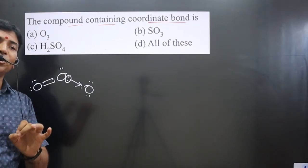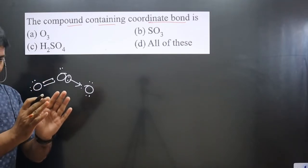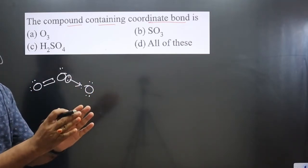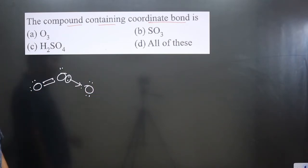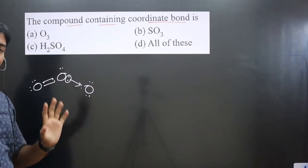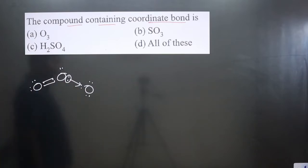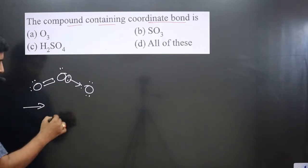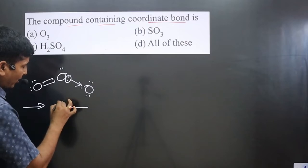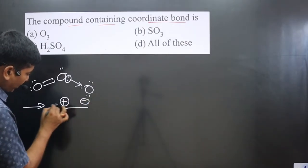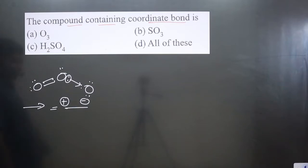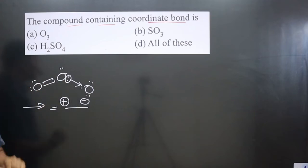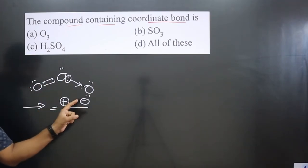A coordinate bond is a special type of covalent bond in which an electron pair is shared from one atom to another atom — mutual sharing is not there. Now its octet is also complete. One coordinate bond equals one covalent bond. The negative sign is toward the head of the arrow and the positive charge is at the tail, showing the direction of electron density movement.